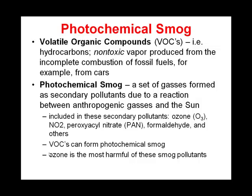Volatile organic compounds are examples of secondary pollutants. In and of themselves they are not pollutants — they're not toxic — and volatile organic compounds are generally associated with burning fossil fuels. Photochemical smog is a secondary pollutant that actually comes from VOCs. So VOCs themselves are not a pollutant, but photochemical smog is a secondary pollutant that comes from things like VOCs.